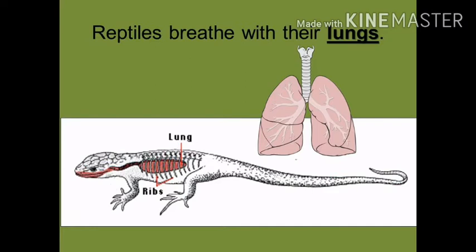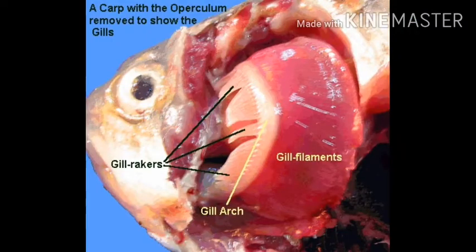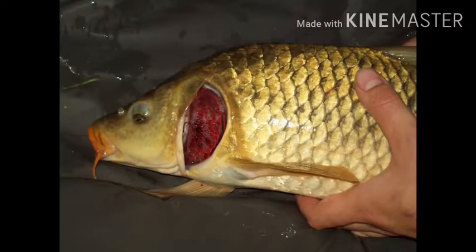Therefore, higher animals have special respiratory organs with a larger surface area through which they fulfill their needs. For example, human lungs have millions of air sacs or alveoli that cover a surface area many times bigger than the body itself.